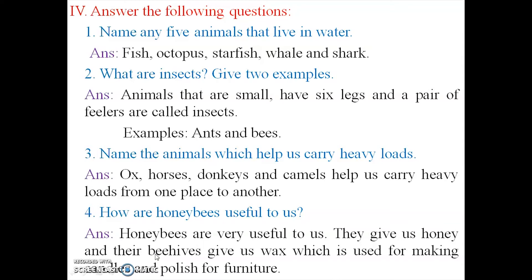Fourth section: Answer the following questions. First question — name any five animals that live in water. Answer: fish, octopus, starfish, whale, and shark. These are all water animals. Spell: F-I-S-H, fish. O-C-T-O-P-U-S, octopus. S-T-A-R-F-I-S-H, starfish. W-H-A-L-E, whale. S-H-A-R-K, shark.